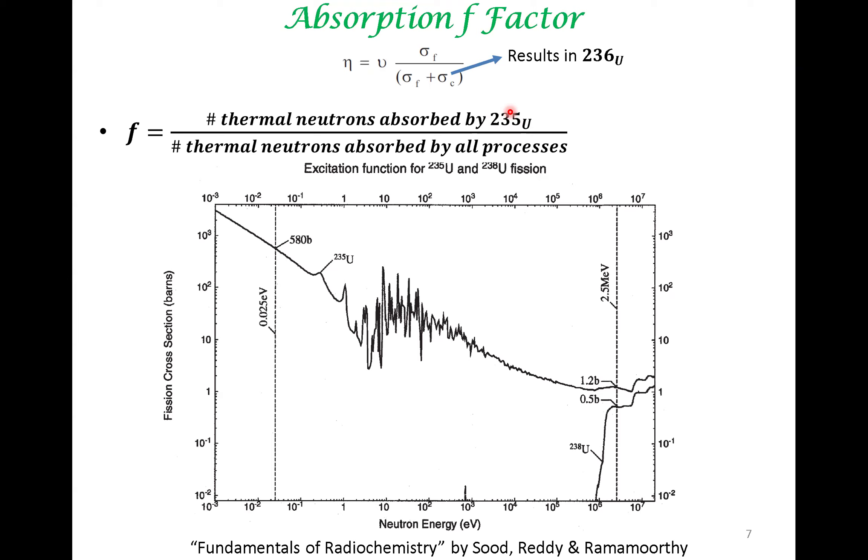That is the control rod, that is the moderator, that is the structural materials that goes into making the reactor. All these can absorb neutron because neutron is neutral, and it can easily penetrate into all these components. What is going to be useful towards fission are the thermal neutrons absorbed by U235 because in this regime, the fission cross-section is significant for U235. This is also important. You want to be increasing f.